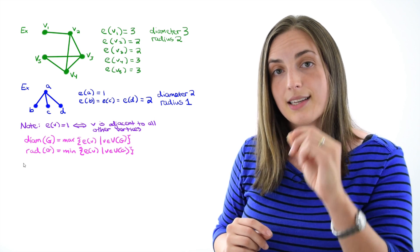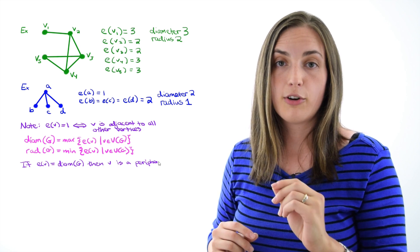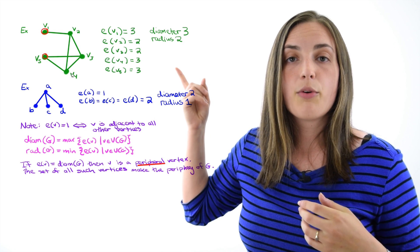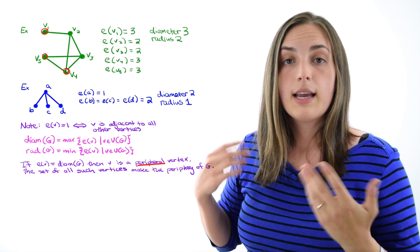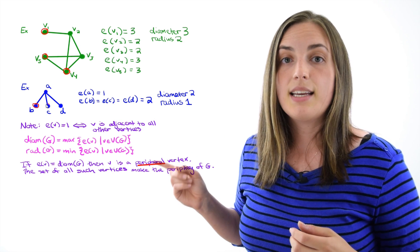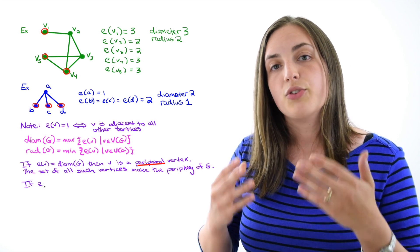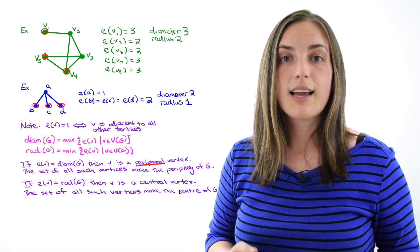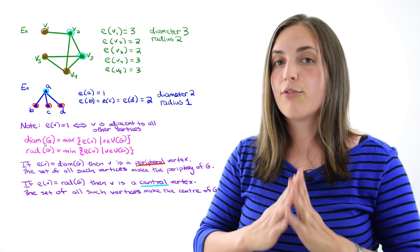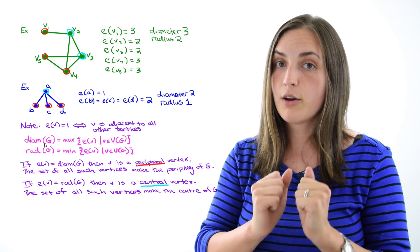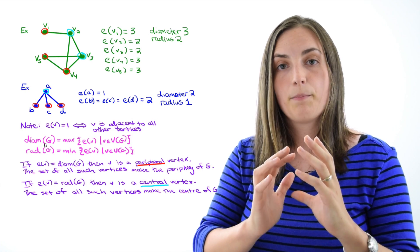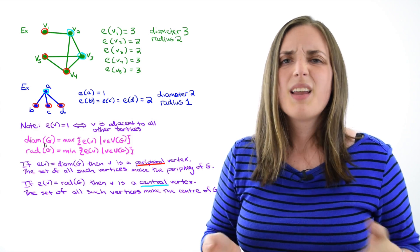Two new words: periphery and center. If a vertex has eccentricity equal to the diameter, it's called a peripheral vertex, and the set of all such vertices is called the periphery of the graph. Let's highlight the periphery in red for both graphs — those are all vertices whose eccentricity equals the diameter. If a vertex has eccentricity equal to the radius, it's called a central vertex, and the set of all of those makes up the center. Let's highlight the center in light blue for both graphs. So the center is the set of vertices with minimum eccentricity, and the periphery is the set with maximum eccentricity.